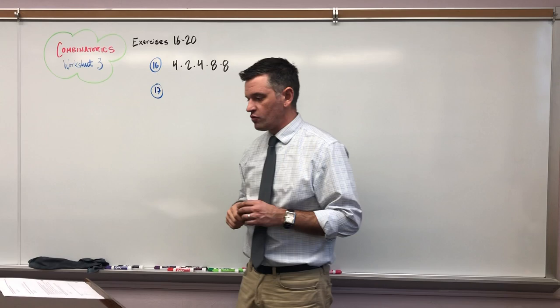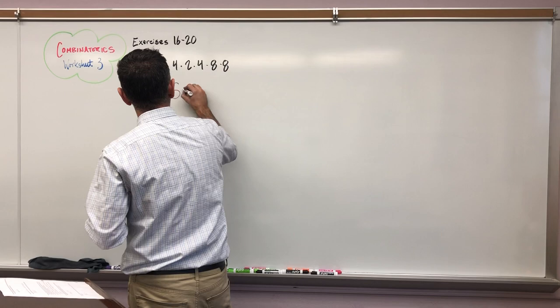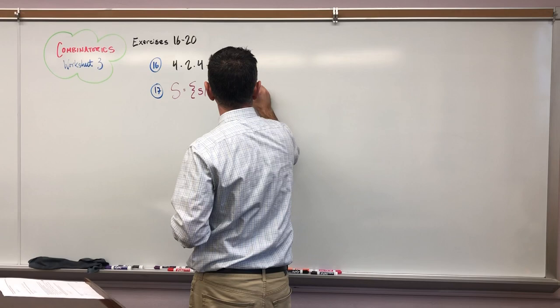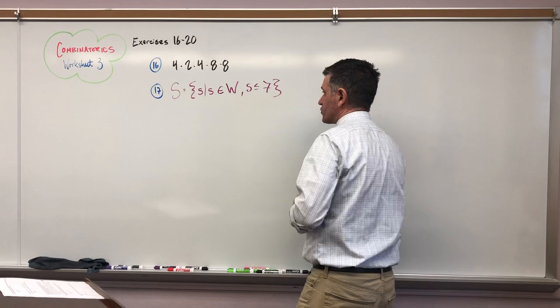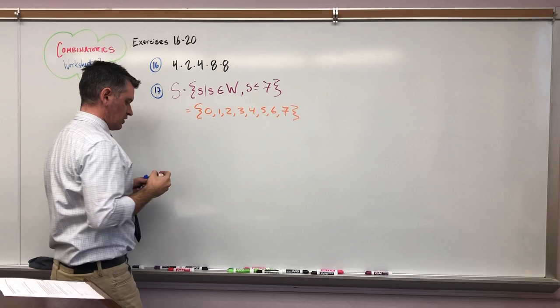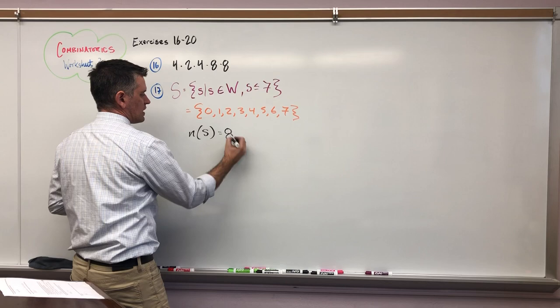Number 17: we're going to draw from set S, where, a little set builder for you, let's review that real quick. S is equal to the set of little s's such that little s is an element of the whole numbers and s is less than or equal to seven. Just as a refresher, timely as we'll need to know this stuff on our exam. Whole numbers include zero, so that's what we're dealing with. Notice that the cardinality of set S is equal to eight.